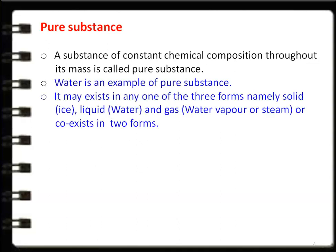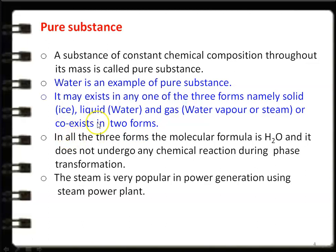Water is an example of a pure substance. It may exist in any one of three forms: solid form (ice), liquid form (water), or gaseous form (water vapour or steam). It may also co-exist in two forms. Water is called a pure substance because in all three forms the molecular formula is H₂O, and it does not undergo any chemical reaction during phase transformation. In all three forms, the chemical formula remains the same.